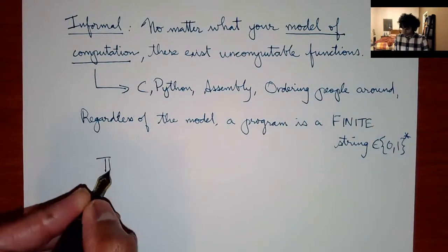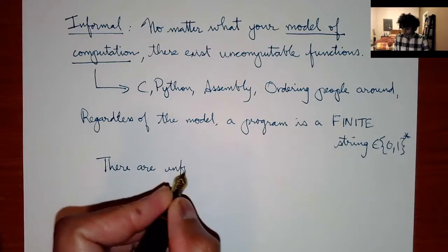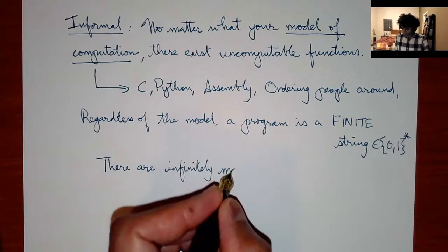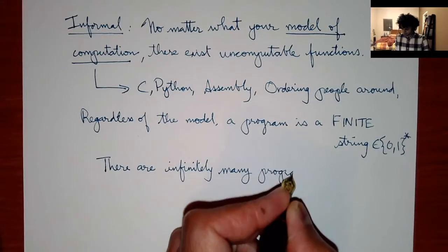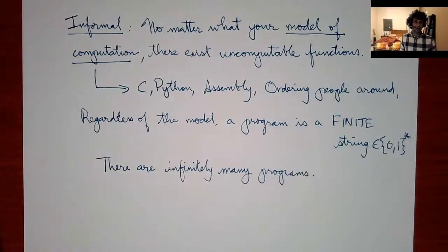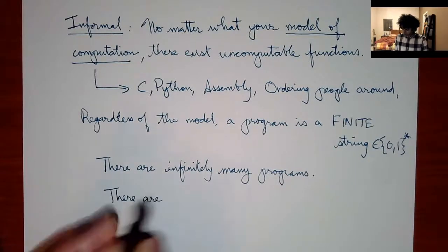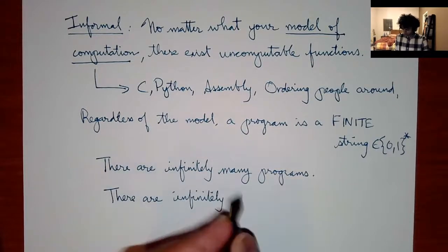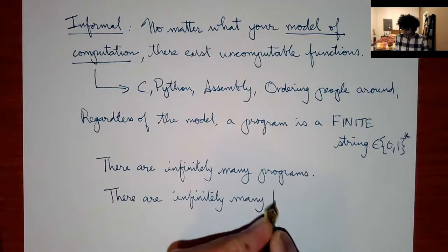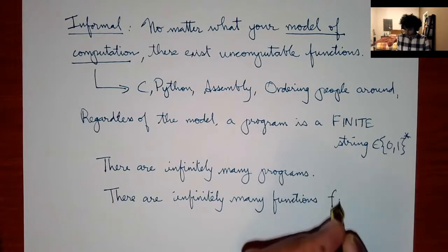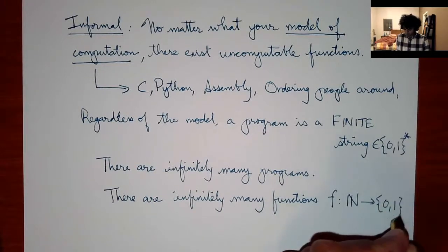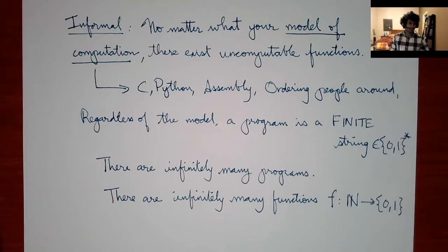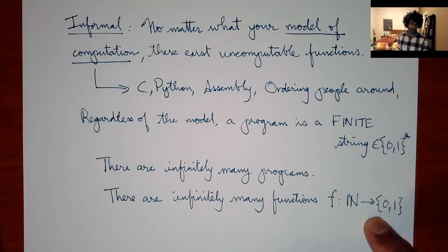Note that there are infinitely many programs — in whatever model or language, you can come up with infinitely many programs. And there are infinitely many functions. For simplicity, we'll think of functions that go from natural numbers to {0, 1} — that is, functions from ℕ to {0,1}. A function is just a mapping from ℕ to {0,1}.